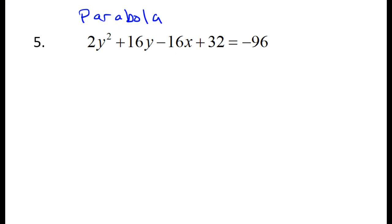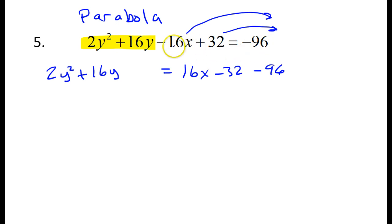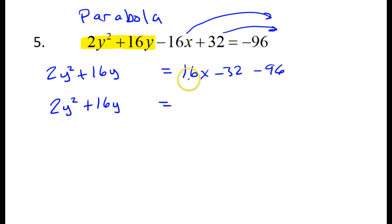Check out number 5. Since the y is squared, the y terms are going to stay on the left-hand side. Everything else needs to go to the right-hand side. So I'm going to have 2y squared plus 16y. And then on the other side, I will have positive 16x minus 32, and then the minus 96 that was already there. I moved these two things over and they became opposite signs. Let me go ahead and combine these like terms — so this is minus 128.